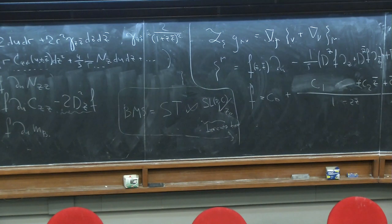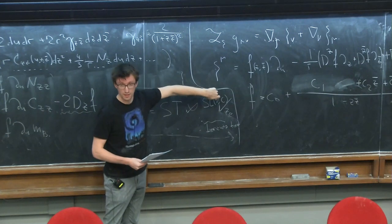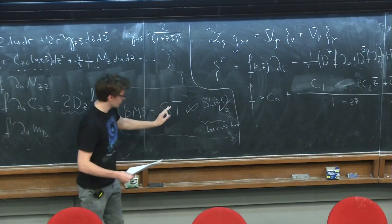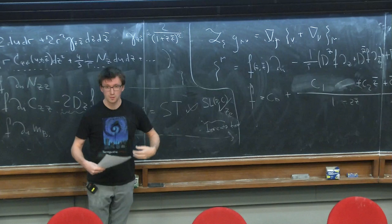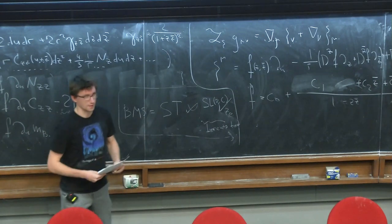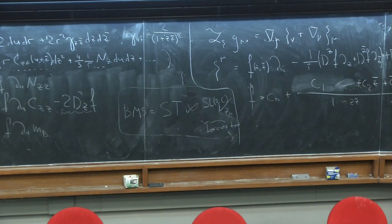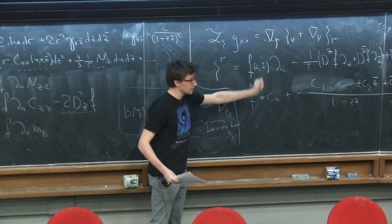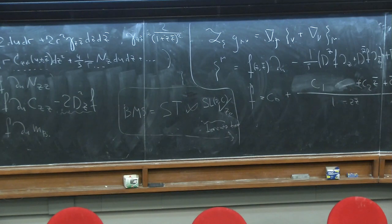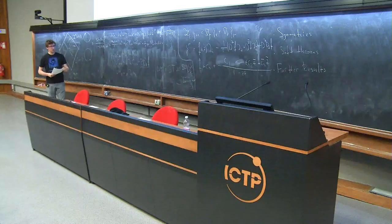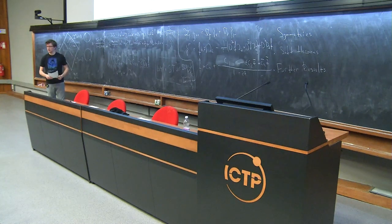In the canonical formalism, this super-translation will be generated by the Dirac bracket with the charge Q_F that we discussed, or in quantum theory by a commutator with Q_F. The other charges labeled by Y^a are related to super-rotations, which is what I'd like to discuss next. In the canonical formalism, the asymptotic symmetry gives rise to an associated charge acting through Dirac brackets, and the result is that this charge Q_F exactly does the job.